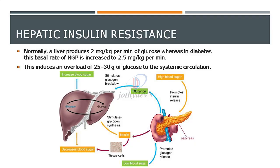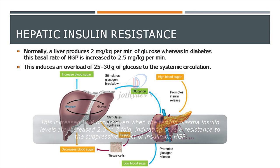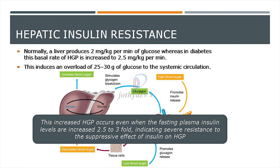Regarding hepatic insulin resistance: normally the liver produces 2 mg/kg/minute of glucose, whereas in diabetes it is 2.5 mg/kg/minute — an extra load of 25 to 30 grams of glucose into the systemic circulation. This increased hepatic glucose production occurs even when fasting plasma insulin levels are elevated up to threefold, indicating severe insulin resistance to insulin's suppressive effect on hepatic glucose production.